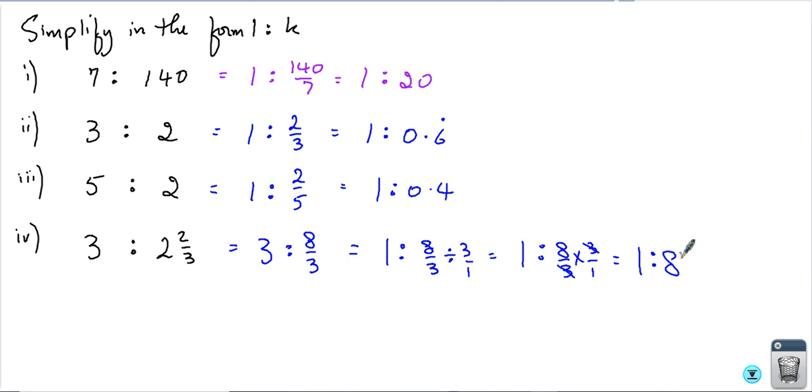So this is the first part. I have changed these ratios in the form 1 is to n. Now suppose I have to change n is to 1. So simplify in the form k is to 1. Suppose I have 4 euro is to 20 euro, and I need to simplify that ratio. So I know that it is something is to 1.